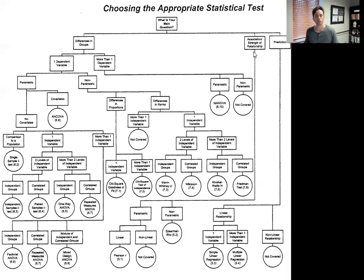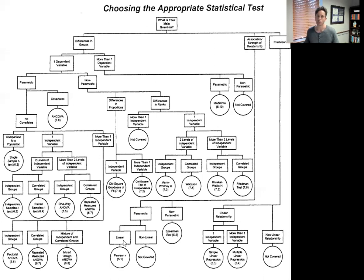For association or strength of relationship, we would be trying to determine, for example, whether there is a relationship between SAT scores and college success or college performance. That would be one way to think about the relationship between two or more variables. We would follow the parametric approach and look at a linear analysis, trying to determine if there is a slope — as SAT scores go up, so does college success. We would be using a Pearson R for this type of evaluation.